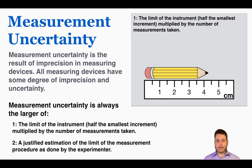We can imagine that we're measuring a pencil and we're comparing it to a ruler. So we need to use the limit of the instrument, half of the smallest increment, multiplied by the number of measurements taken.